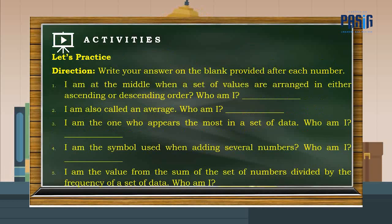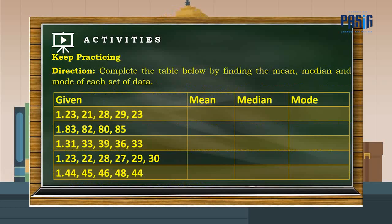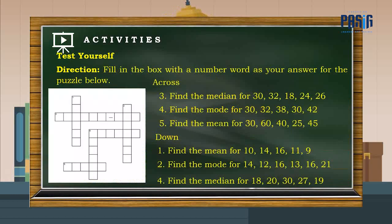Let us have the activities. Let us practice. Write your answer on the blank provided after each number. Keep practicing. Complete the table below by finding the mean, median, and mode of each set of data. Test yourself. Fill in the box with a number word as your answer for the puzzle below.